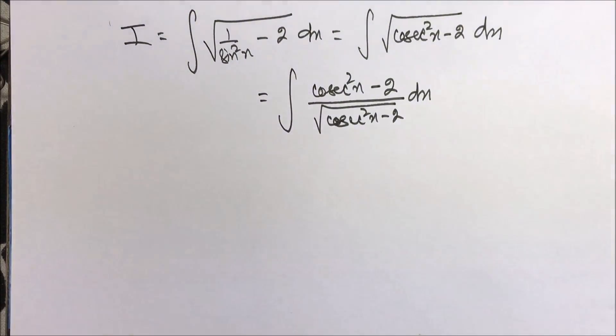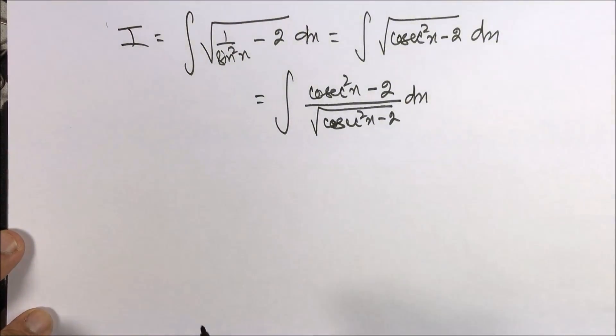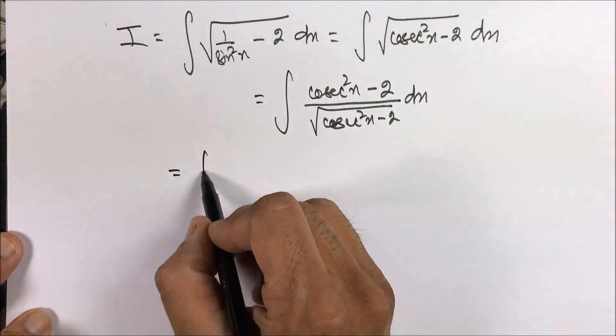When we multiply and divide with the same term, root and root will be linear and the effect will be seen in a root form in the denominator. Now split this into two questions.